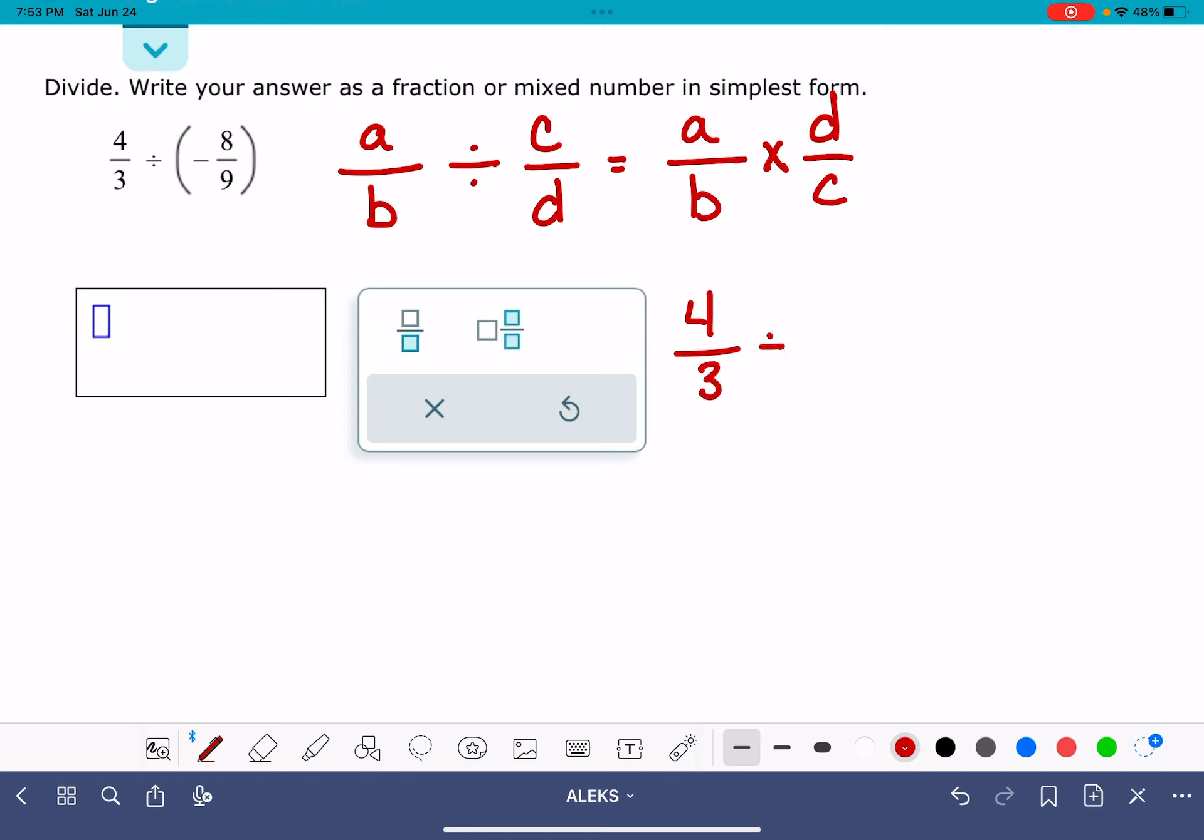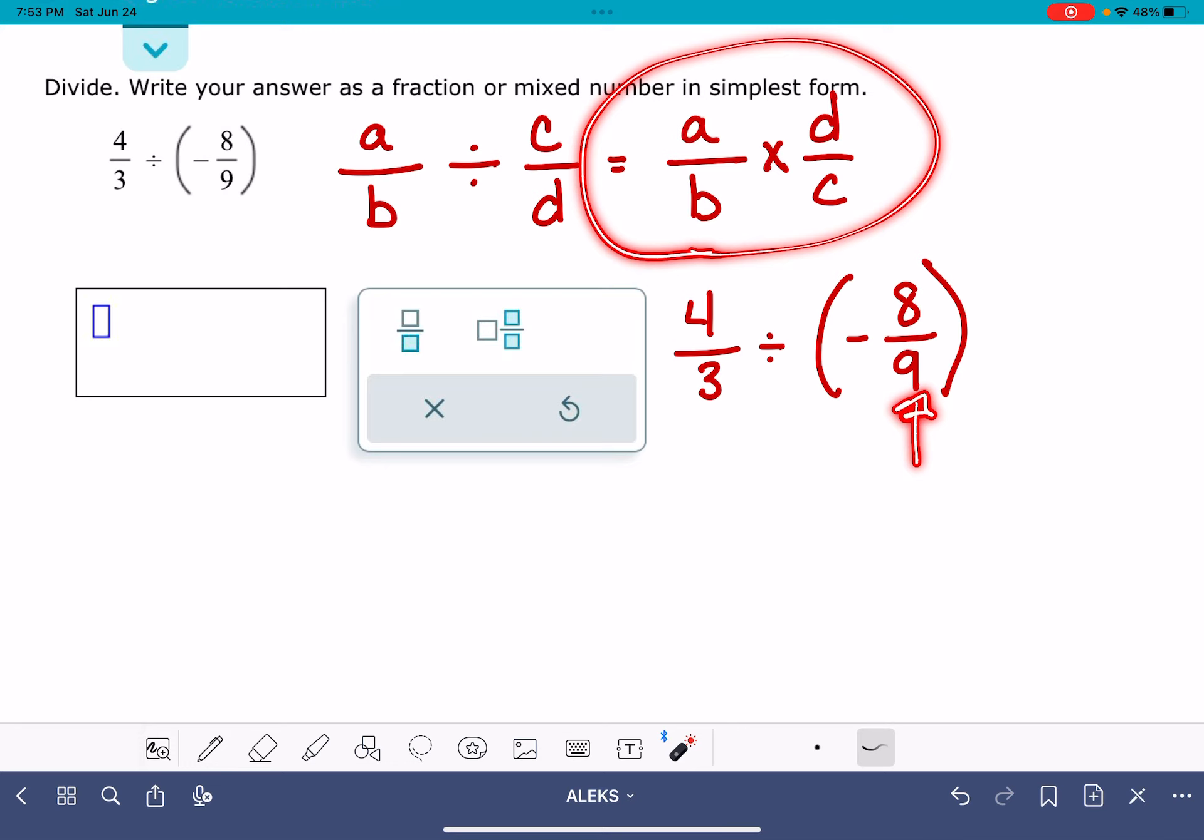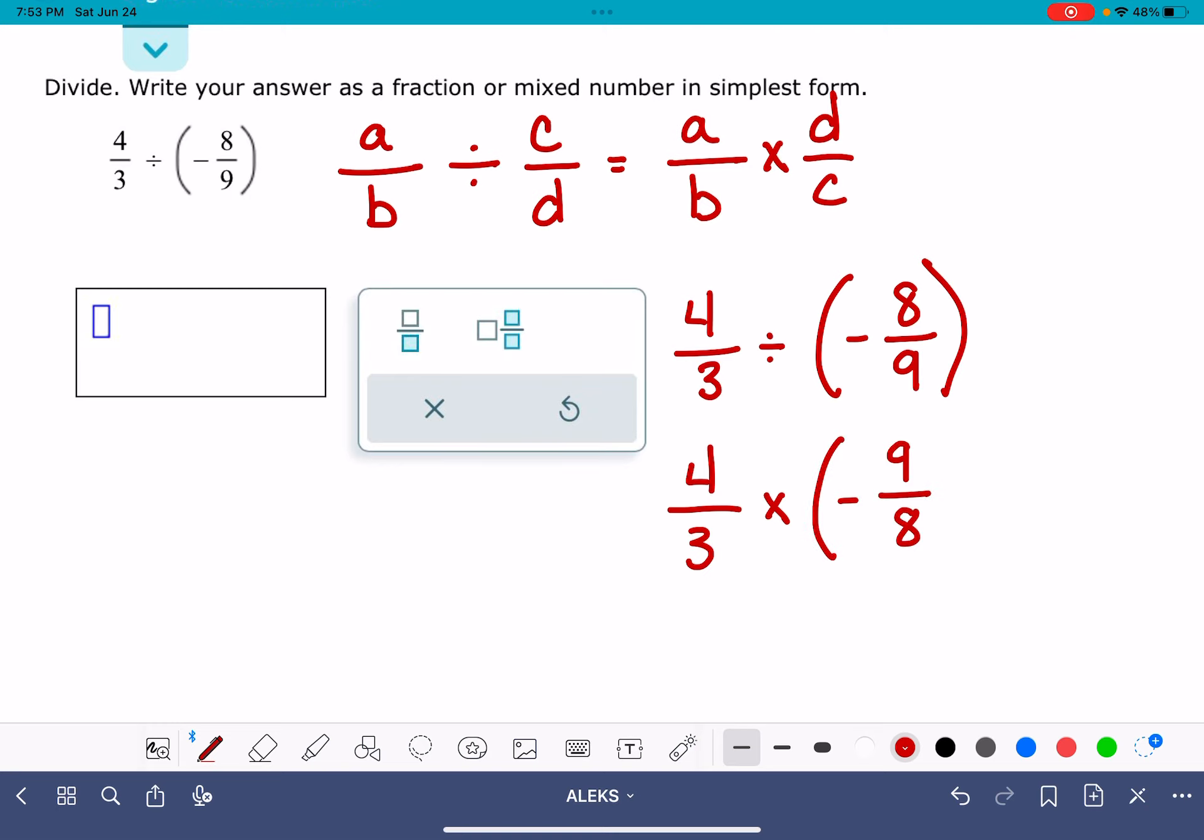So for the problem that's been given to me, I have 4/3 divided by negative 8/9. Applying this rule right here, I'm going to flip-flop the 8 over 9 portion. That's going to give me 4/3 times negative 9/8.